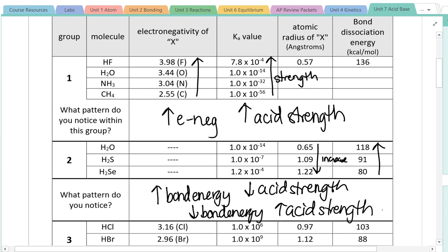So to be a good acid, we want high electronegativity of the atom that the hydrogen is bonded to, and we want that bond to be relatively weak.